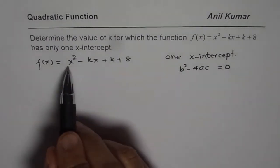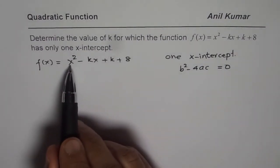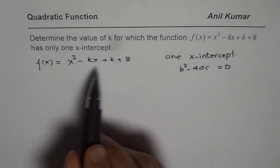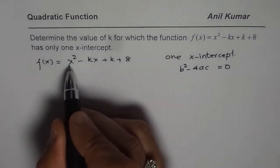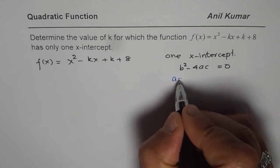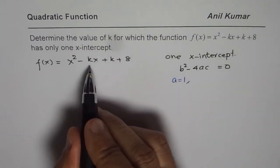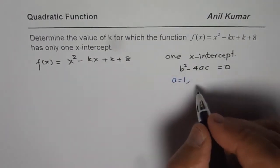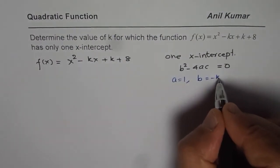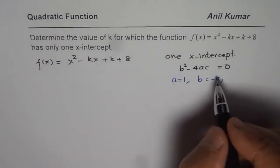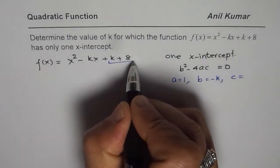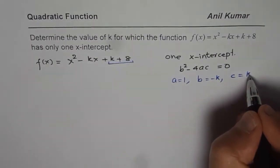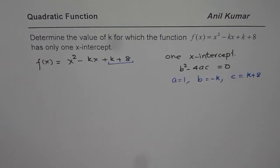We are given this quadratic equation. What is a, what is b, and what is c? From the equation, a is the coefficient of x², so a = 1. b is the coefficient of x, so b = -k. c is the constant term, and in this case the constant term is k + 8. So k + 8 becomes the constant.